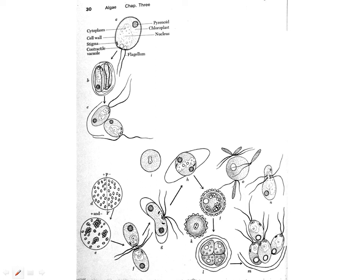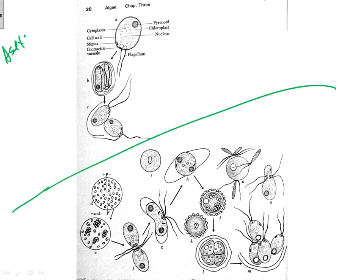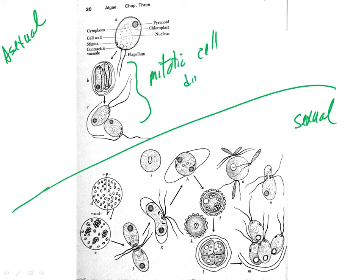Chlamydomonas reproduction involves two kinds: asexual reproduction above the line and sexual reproduction below. Asexual reproduction is simply by mitotic division — a unicellular organism undergoing mitosis to produce two new daughter cells identical to the parent cell. Sexual reproduction is a bit more complex, but still straightforward for a unicellular organism.